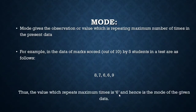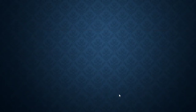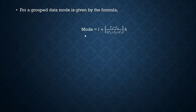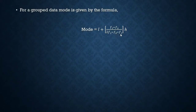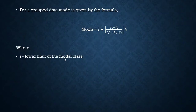For any grouped data the mode is given by the formula: Mode = l + [(f₁ − f₀) / (2f₁ − f₀ − f₂)] × h, where l is the lower limit of the modal class. We will see what the modal class is when we solve our example.